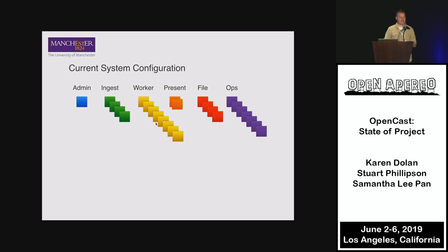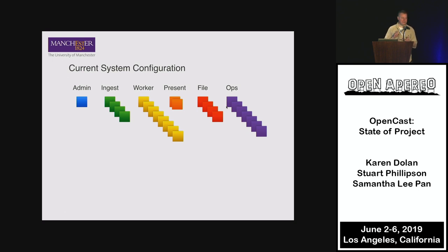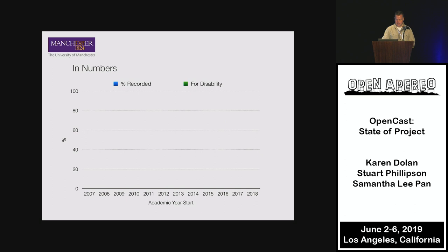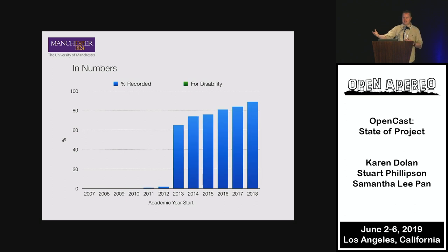Opencast is a heterogeneous application. There's an admin node that manages the entire process, an ingest node that handles file transfers to and from lecture theatres, and worker nodes that do the actual video processing — receiving a cookbook of instructions from the admin node and processing recordings into final MP4 versions. There are also presentation nodes, file-level nodes, and at Manchester, ancillary nodes for database operations and Jenkins builds. Admin nodes tend to be larger; workers tend to have more CPU power.